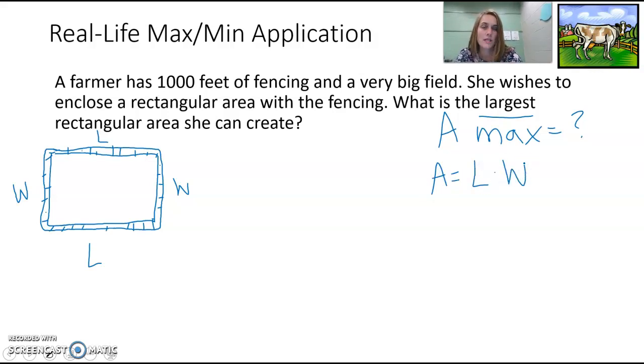But that's three variables then. Area, length, width. So we need to use this fact that we have 1,000 feet of fencing. So this fence is 1,000 feet.